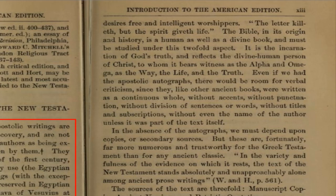Even if we had the apostolic autographs, there would be room for verbal criticism since they, like other ancient books, were written as a continuous whole without accents, without punctuations, without division of sentences or words, without titles and subscriptions, without even the name of the author unless it was part of the text itself. So you see that the Bible was not produced from any original manuscript — this is what they are saying, barely 270 years after the 1611 KJV. Whenever they got the other one, they claimed they translated the KJV from the original manuscript, which cannot be true because if they lost the manuscript, there is no way they could have found it later.